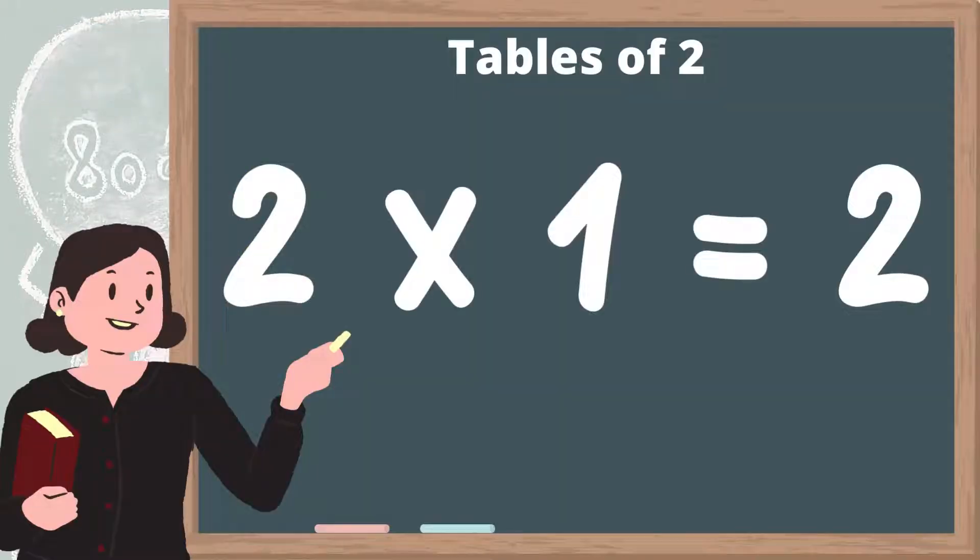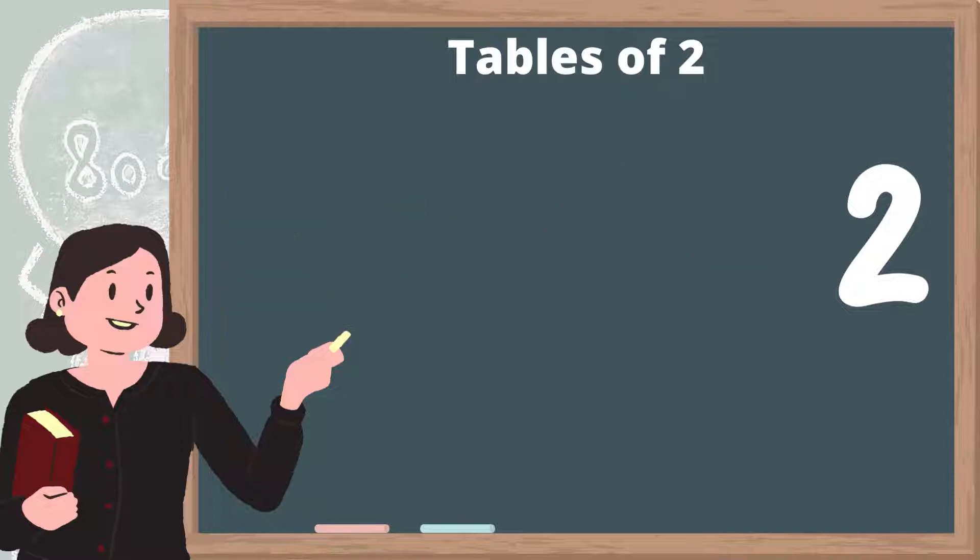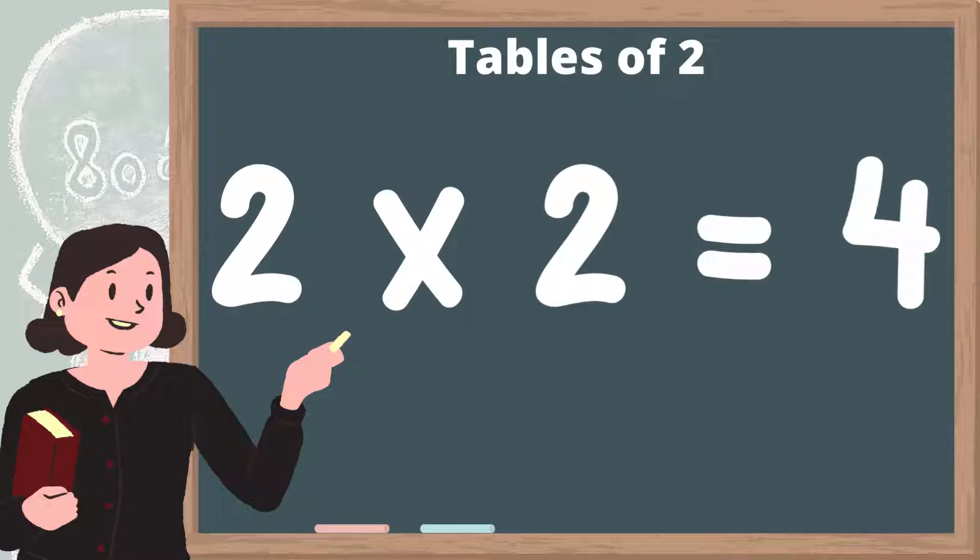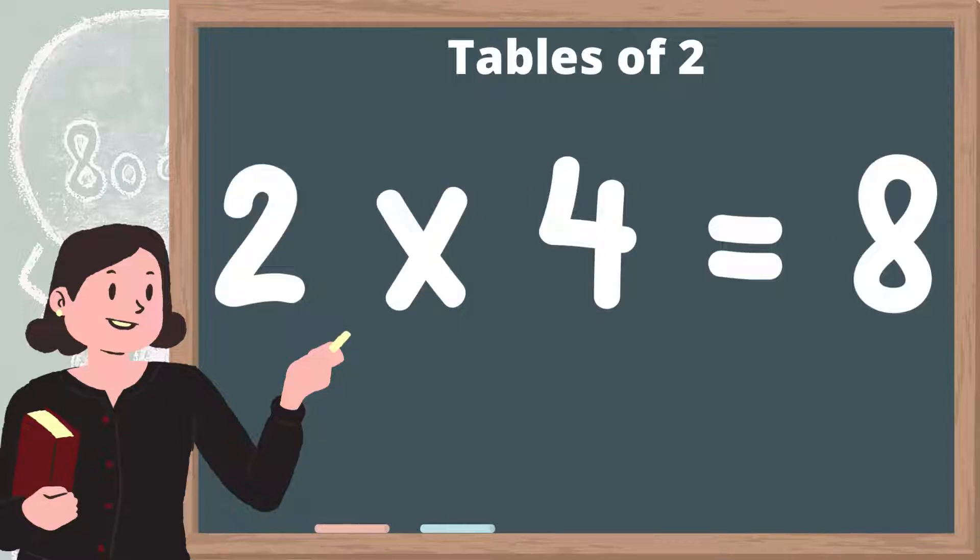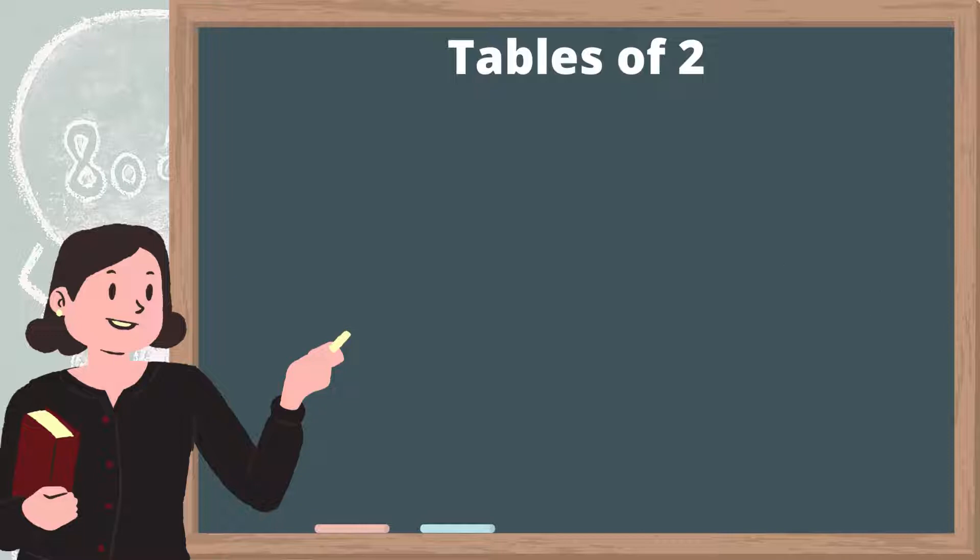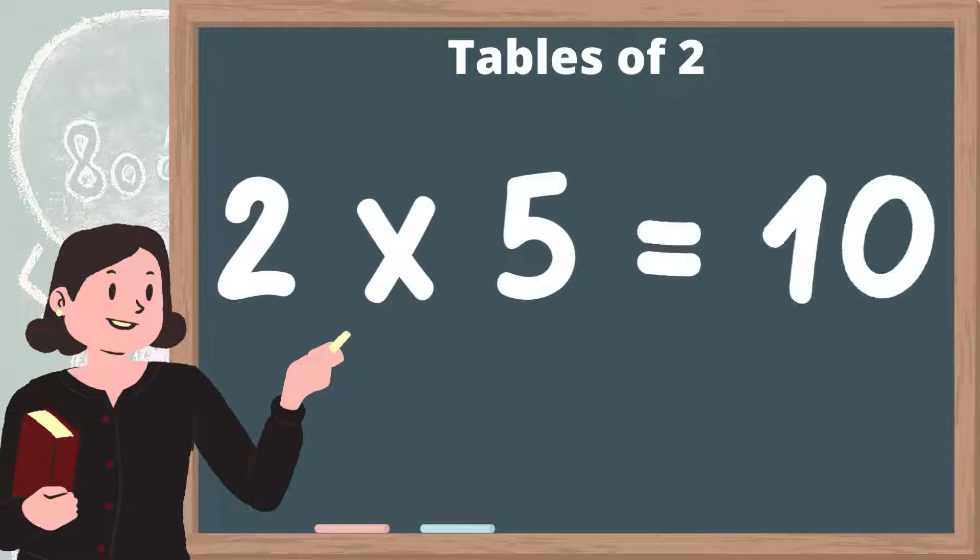Two ones are two, two twos are four, two threes are six, two fours are eight, two fives are ten.